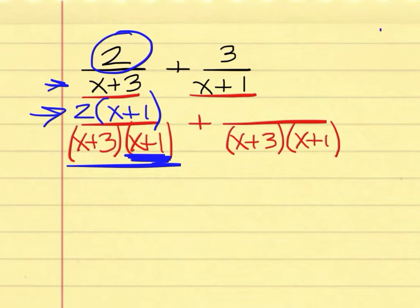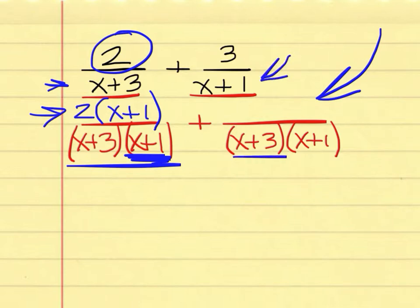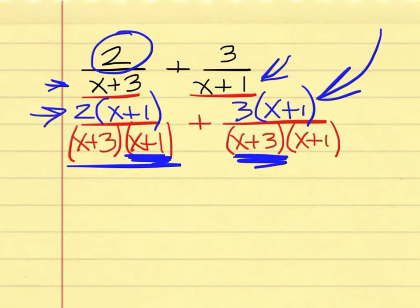Now on the right side, what would I multiply the 3 by to come up with the new numerator? Jones — x plus 3 is right, because we had to multiply (x plus 1) by (x plus 3) to get our denominator. What you do to the bottom, you do to the top. I've mistakenly written a 1 there — that should be a 3. So three times the quantity (x plus 3).